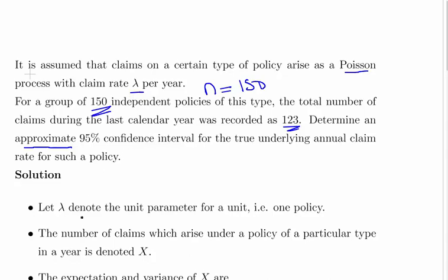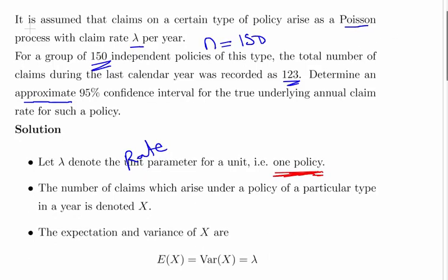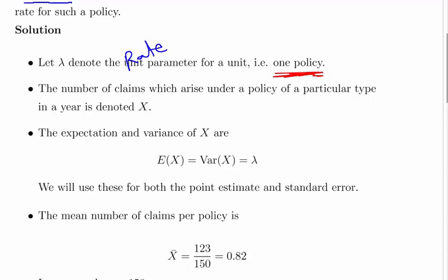Let lambda denote the rate parameter for a unit, for one policy. Not so clear here why I mentioned this, but if we actually look at other videos, presentations where I do similar sort of stuff, it's important to remember what lambda actually refers to. In this case, it's one particular policy, not 150 policies. That's the sort of little trick or little hazard that you have to watch out for when you're doing these Poisson random variables things. What does lambda refer to? Is it one? Is it the group? Just that sort of thing.